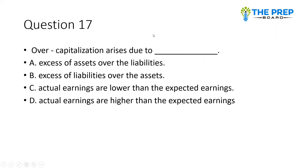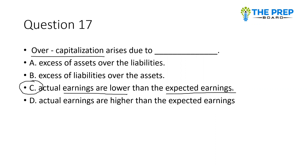Why does overcapitalization occur? Options are: excess of assets over liabilities, excess of liabilities, actual earnings lower than expected earnings, or actual earnings higher than expected earnings. The correct option is C — actual earnings lower than expected earnings. For example, if we expected 10 lakhs in business but only achieved 5 lakhs, that is an overcapitalization condition. A very important question to note.